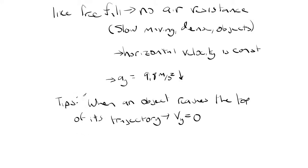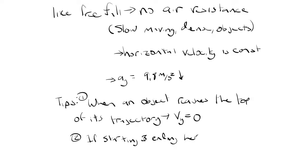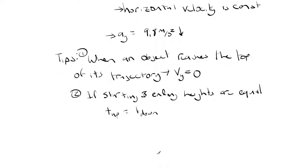Tip two: in the special case where the starting and ending heights are the same — you launch the projectile and it lands at the same height — the time it takes to go up equals the time it takes to go down. It takes just as long to reach the peak as it does to come from the peak back to the ground.